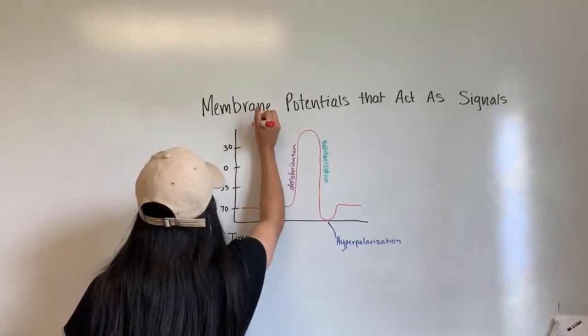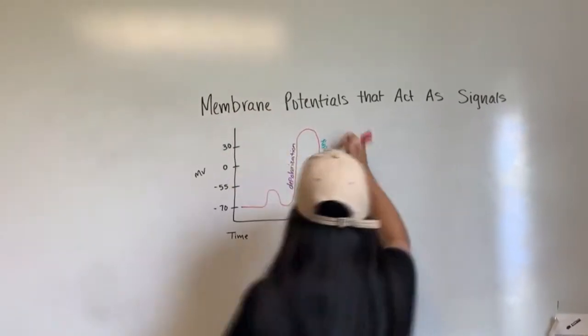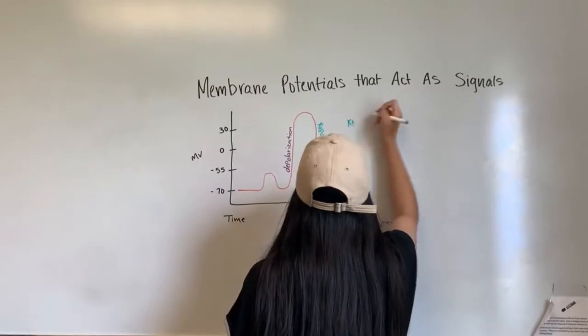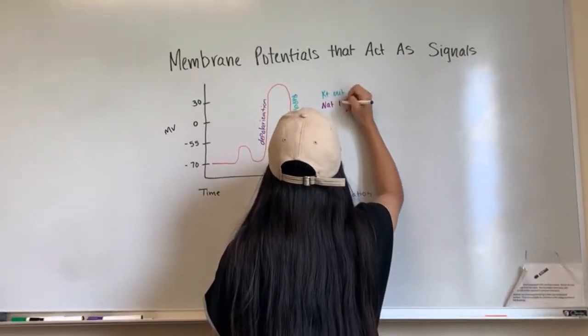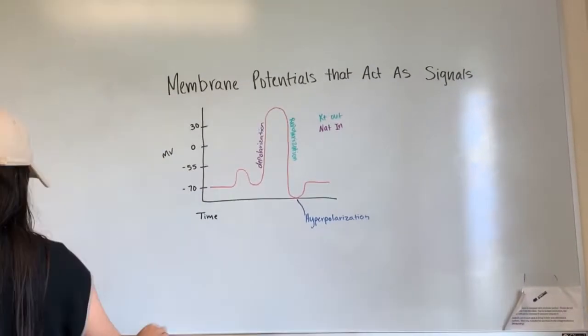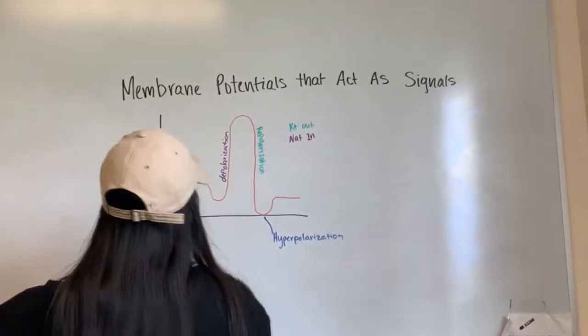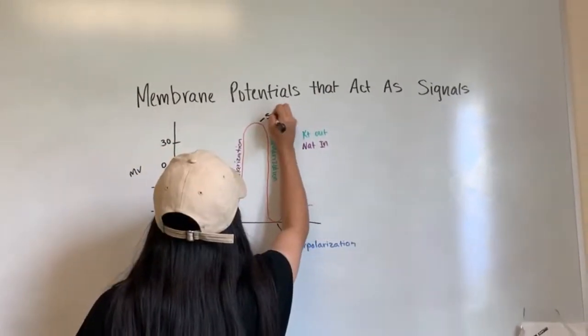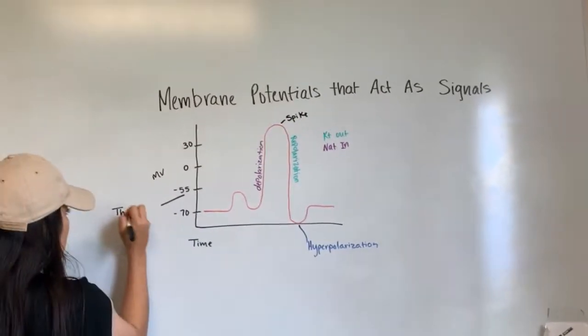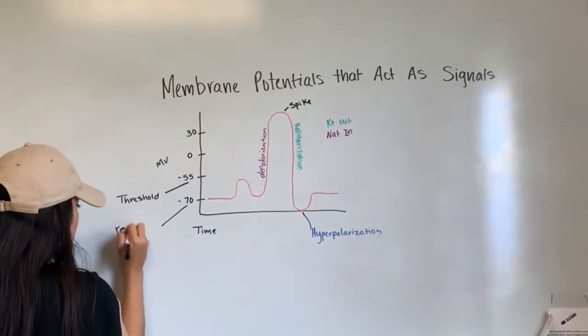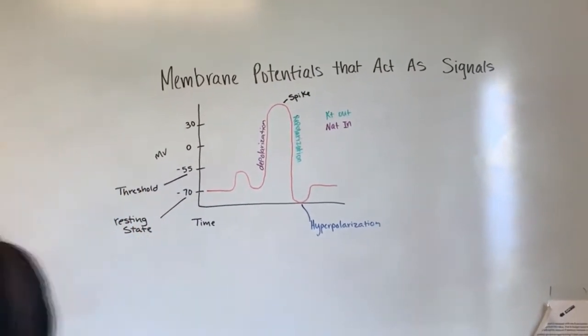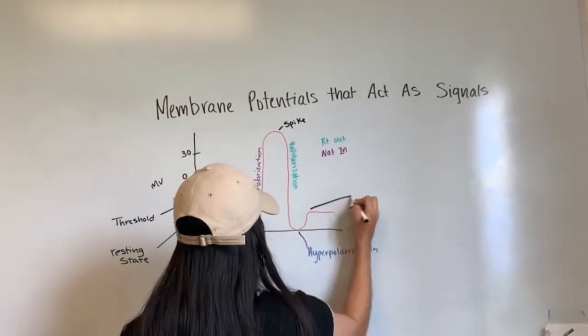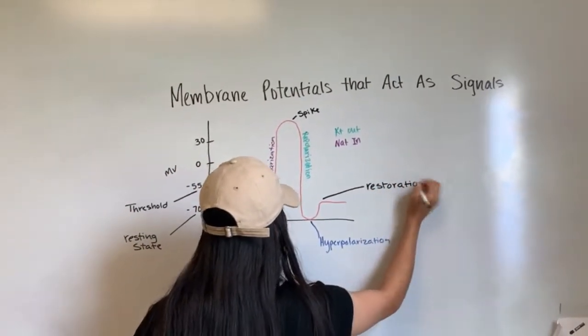The start of an action potential begins in its resting state of negative 70 millivolts and this is where the voltage gates are closed. When you have to depolarize axon hillock the sodium gates open from a threshold of negative 55 millivolts, the action potential spike. Repolarization causes a decrease in sodium permeability and an increase in potassium permeability.